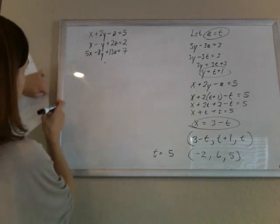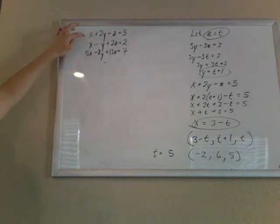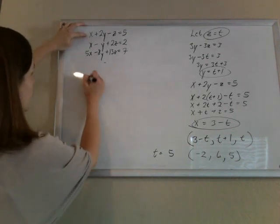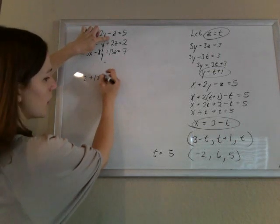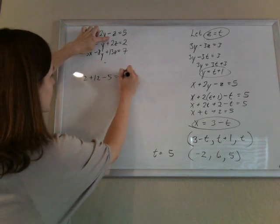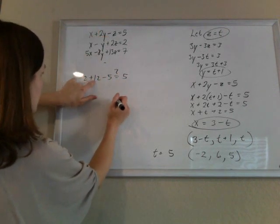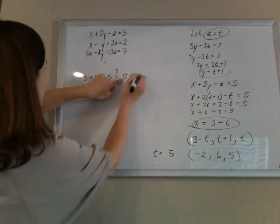So if x is negative 2 and y is 6, so that'll be plus 12. And z, so minus 5. Does this equal 5? Cross your fingers. 10 minus 5 is 5. Check.